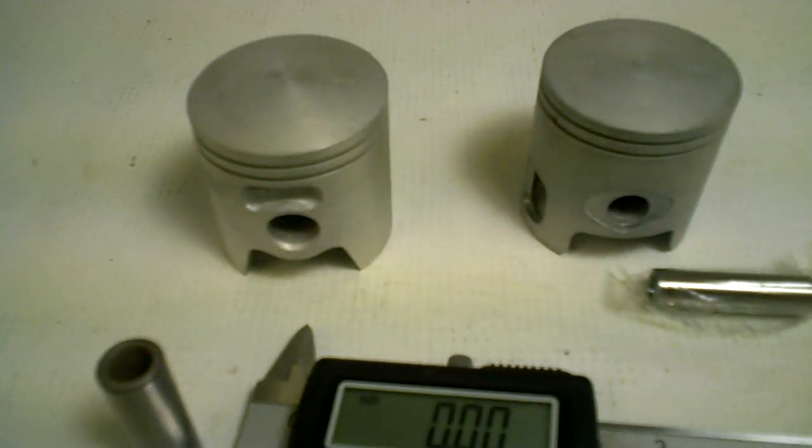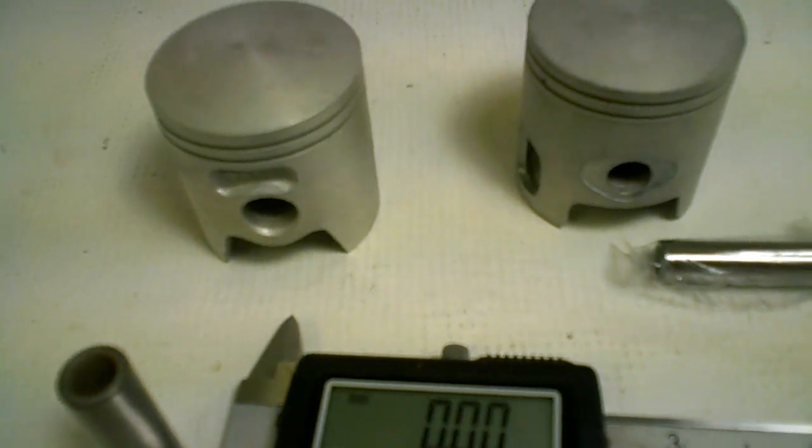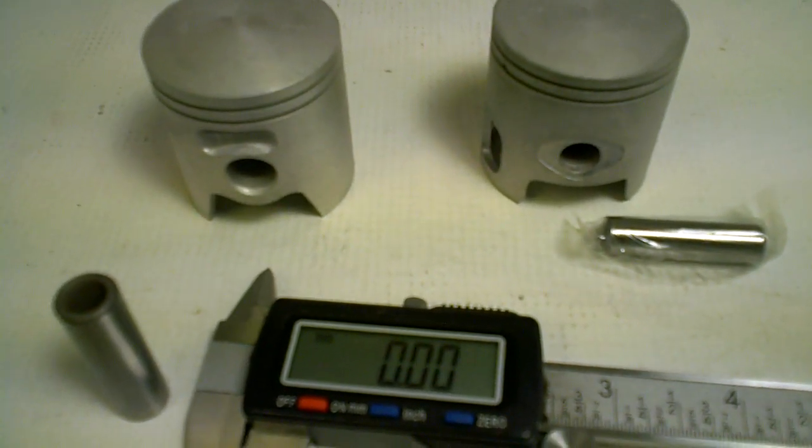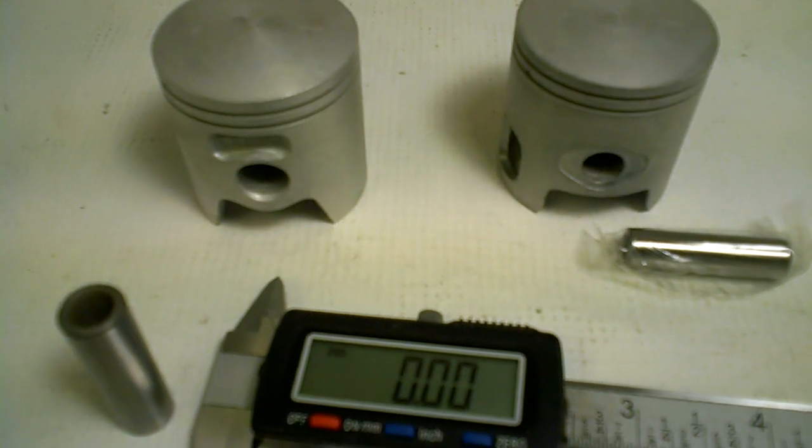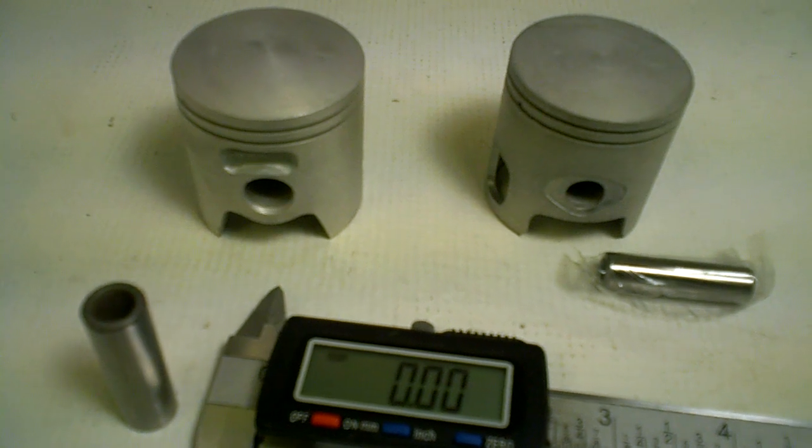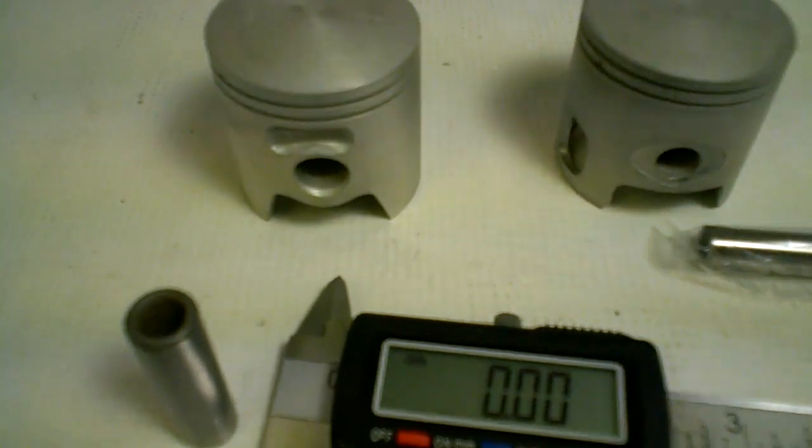But what happens is that, the confusing part, is that you could get a CPI or an MUZ scooter that was made in 2003. And the 2003 version will have the 10mm. And the 2003 version, later on, or the 2004 version, has the 12.